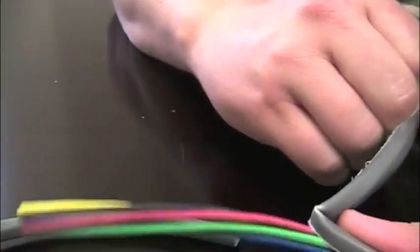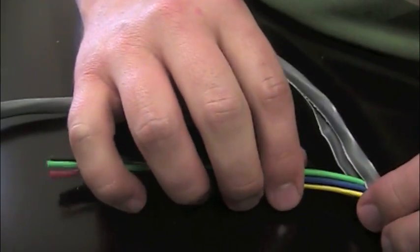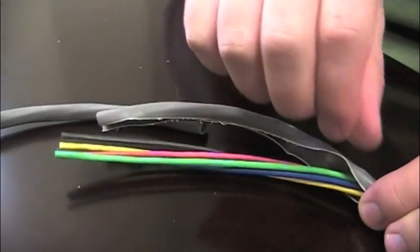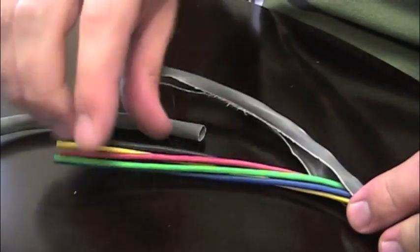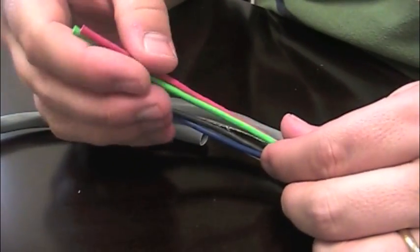If you don't have a piece of that ripcord that you can access, you need to be very careful and advise your customers to be very careful to just score it very lightly, because you don't want to cut into these inner jackets as that will affect the signal of the cable.